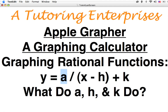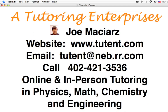So today we were studying the beginnings of graphing rational functions. We were studying y equals a over the quantity x minus h plus k. All right, and we were asking what a, h, and k did. My little business is A Tutoring Enterprises. My name is Joe Maciars. That's my website. That has all kinds of information about my online tutoring and my in-person tutoring, hours and times and things like that. My email is right there. My phone number, if you're local or in the United States, you want to call. If you're somewhere else, you may want to do the email. I do tutoring in physics, math, chemistry, and engineering.